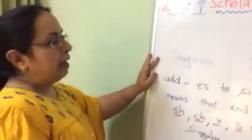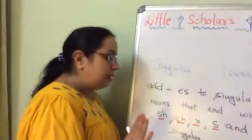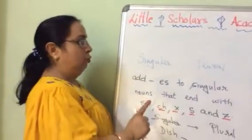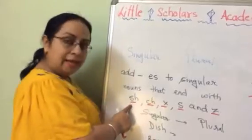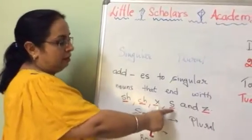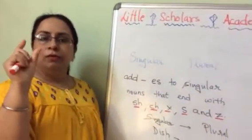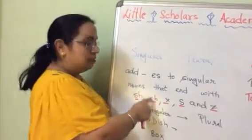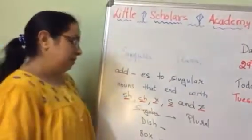So, singular and plural. Abhi there are some words joh end hoote hai — singular nouns joh end hongay sh, ch, x, s, aur z se. Unke ending joh letter hai, woh ya toh sh haa jayega, ya ch hoga, aur x, s, aur z.